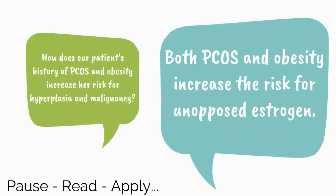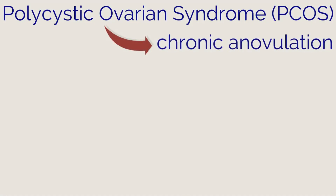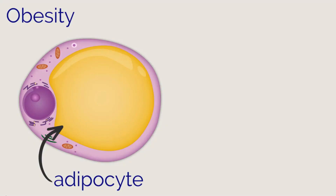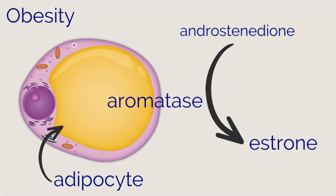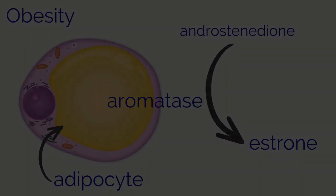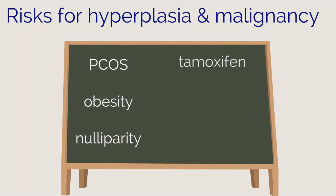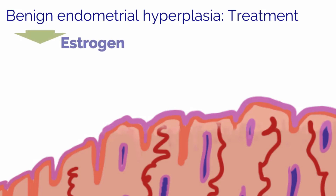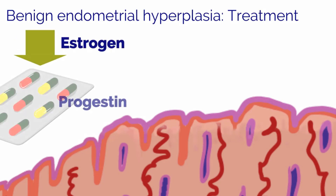Both PCOS and obesity increase the risk for unopposed estrogen. PCOS is associated with chronic anovulation; without ovulation, there is no development of a corpus luteum and therefore no progesterone to cause orderly shedding of the endometrium. Obesity increases risk because aromatase in adipose tissue converts androstenedione to estrone, which is then converted to estradiol. Other common risks include nulliparity, tamoxifen therapy, early menarche, and late menopause. Benign hyperplasia treatment strategies include removing exogenous sources of estrogen and treatment with progestins, which treat the underlying condition and also improve the bleeding pattern.